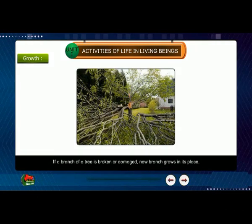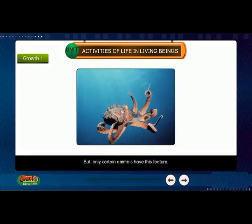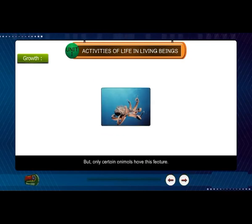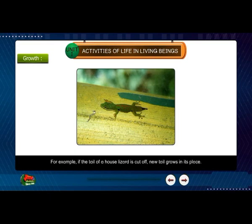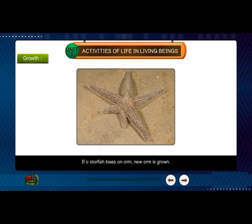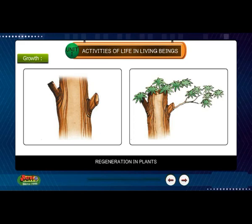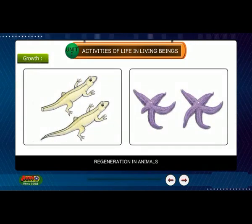If a branch of a tree is broken or damaged, a new branch grows in its place. This is called regeneration, but only certain animals have this feature. For example, if the tail of a house lizard is cut off, a new tail grows in its place. If a starfish loses an arm, a new arm is grown. This is regeneration in plants and animals.